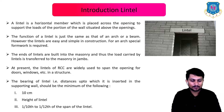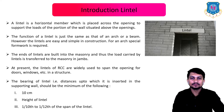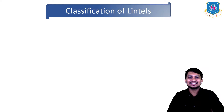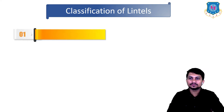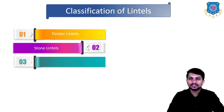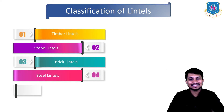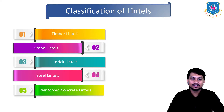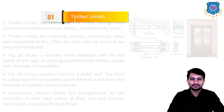Next is the classification of lintels, or the various types of lintels. The first type is timber lintel, second is stone lintel, third is brick lintel, fourth is steel lintel, and fifth is reinforced concrete lintel. First, we will look at timber lintels.